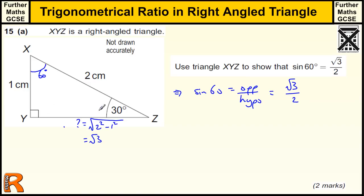You get one mark for working that side out — it's root 3 — and then another mark for just stating the obvious and putting it into the formula. OK, part B.